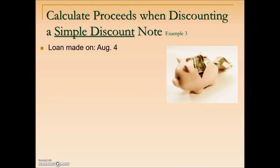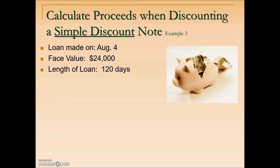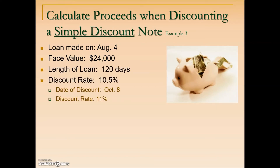Our last example shows that the loan was made on August 4th with a face value of $24,000, a length of 120 days, and a discount rate. By stating a discount rate, we know this original loan was a simple discount note. Before this loan matured, the holder decided to sell it. The bank agreeing to purchase the note is discounting it on October 8th and charging a discount rate of 11%.